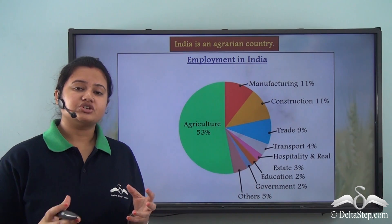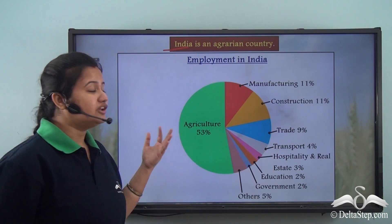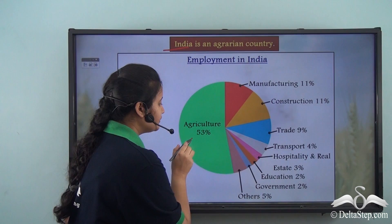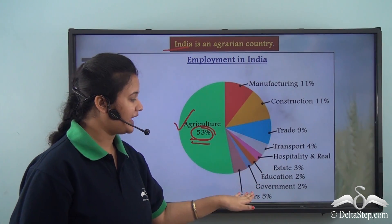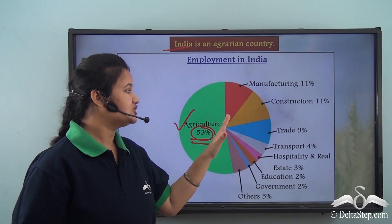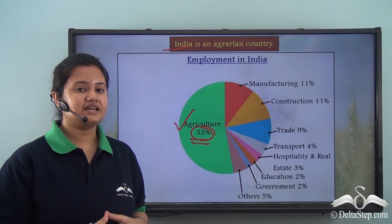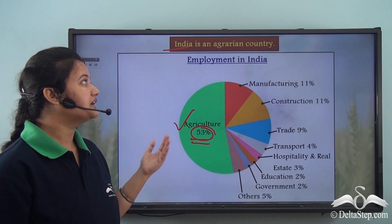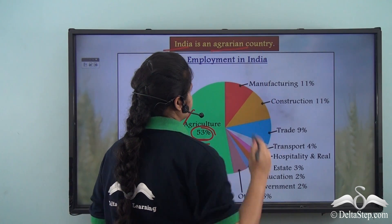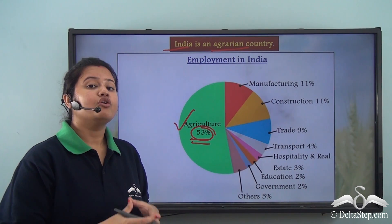Agriculture is a very important activity for a developing country like India. In fact, almost more than 50% of the population — about 53% — is involved in agriculture. In comparison, a small portion of the population is involved in other economic activities, as shown in a pie chart. This tells us agriculture is very important for India's economy, which is why the country is also known as an agrarian country. It generates a huge amount of revenue.